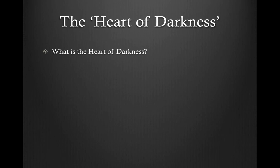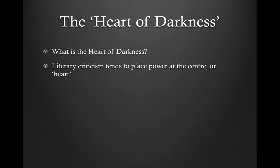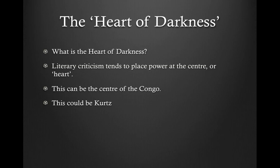The 'heart of darkness' — how can we identify this in the story? Literary criticism tends to place power at the centre: agency is found at the centre, and people on the margins don't have any power. So when looking for the heart of darkness, we're looking for the power of darkness. This can be viewed physically as the centre of the Congo — as Marlow gets closer, he becomes more isolated. It could also be Kurtz himself, whose character turns out to be intensely, almost diabolical. As Marlow journeys up the river to the heart where Kurtz is, Kurtz is revealed to be the heart of darkness.